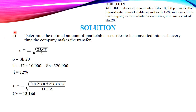Starting with Part A, we need to determine the optimal amount of marketable securities to be converted into cash. The formula is C equals the square root of 2BT over I, where B is the fixed cost, T is the total cash requirements, and I is the opportunity cost. ABC Limited makes cash payments of shillings 10,000 per week, so 10,000 is our T — the total cash requirement per week.